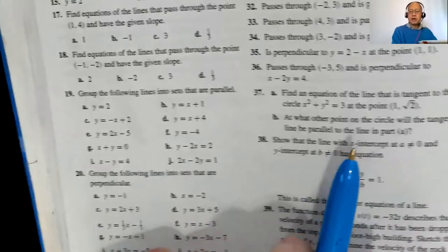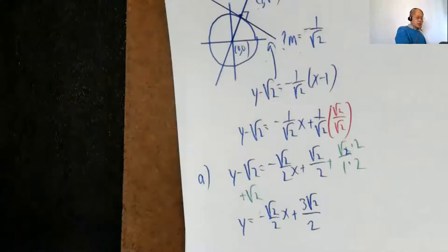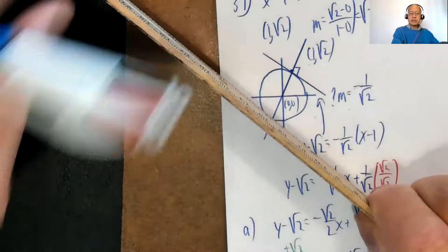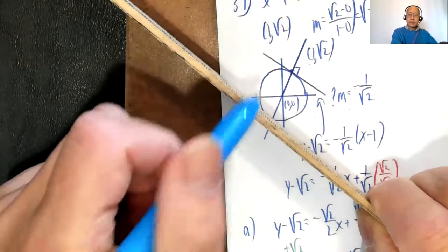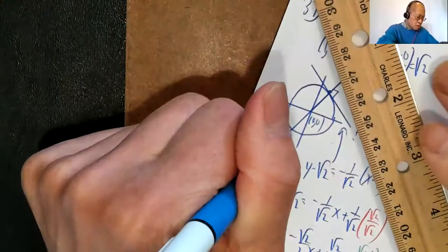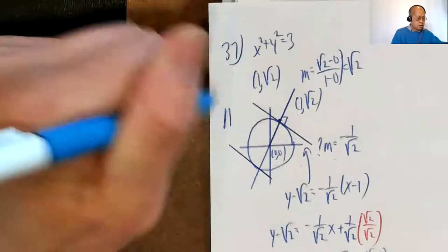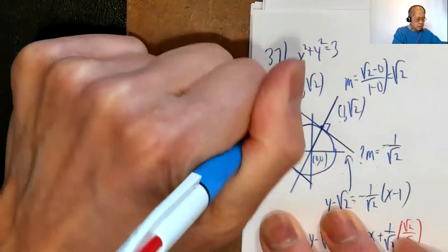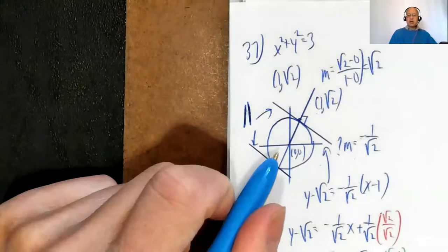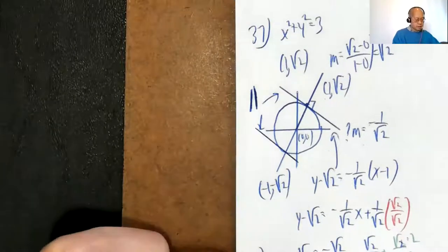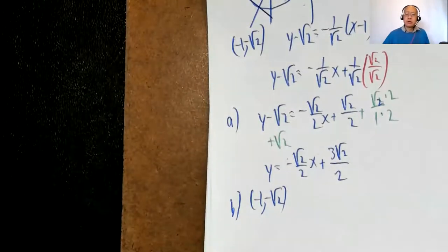For part B: at what other point on the circle would the tangent line be parallel to the line from part A? By symmetry, if the point in part A is (1, √2), the opposite point is (−1, −√2). Those two tangent lines will be parallel to each other. That's pretty much all there is to it.